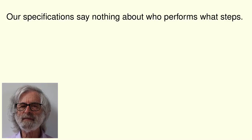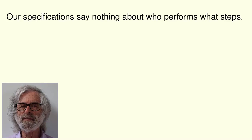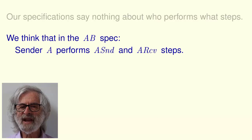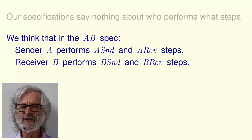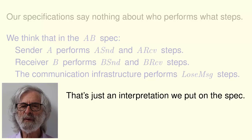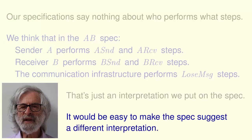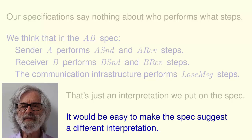but rather as a step taken by the environment in which the protocol is executed. Our specifications say nothing about who performs what steps. We think that in the AB protocol spec, sender A performs A send and A receive steps, receiver B performs B send and B receive steps, and the communication infrastructure performs lose message steps. But that's just an interpretation that we put on the spec, suggested by the way we write the next state action as the disjunction of sub-actions. It would be easy to make the spec suggest a different interpretation — for example, by decomposing the next state action to suggest that A and B both send messages and cause the messages to be lost.